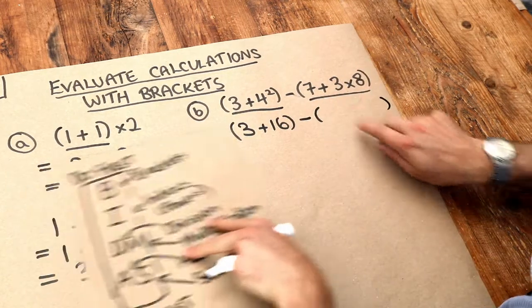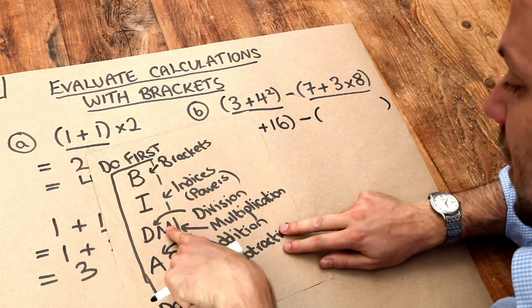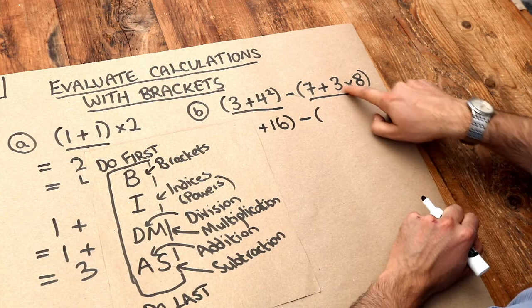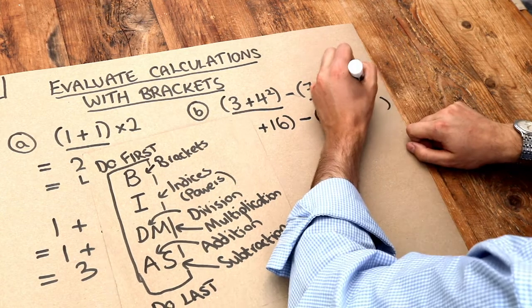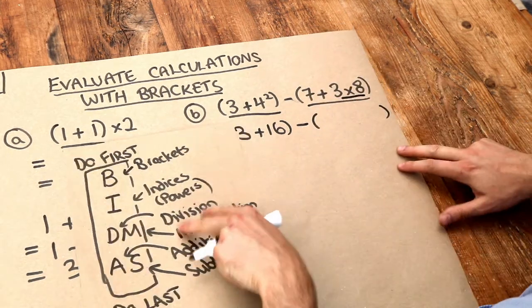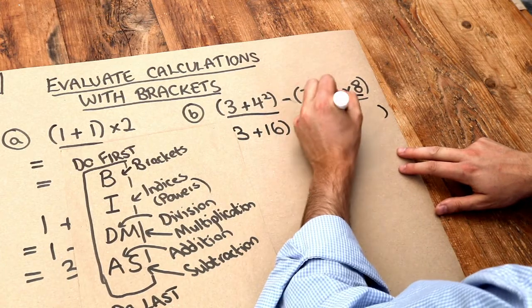And then within this bracket again, we've got to apply BIDMAS. So multiplication comes above addition, so we do this multiplication first before we do the addition. So I'm going to do the 3 times 8 first. That's 24, so we've got 7 plus 24.